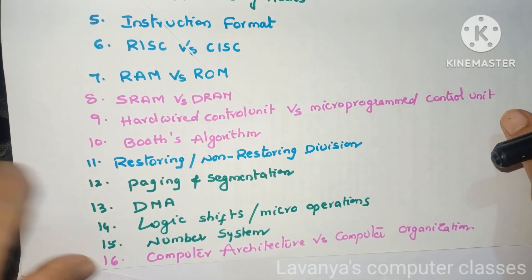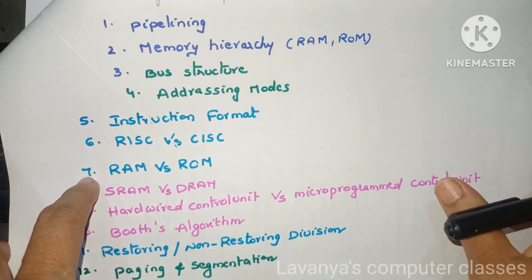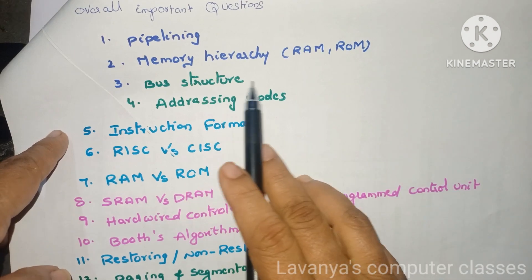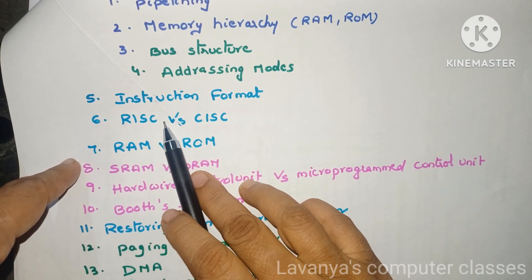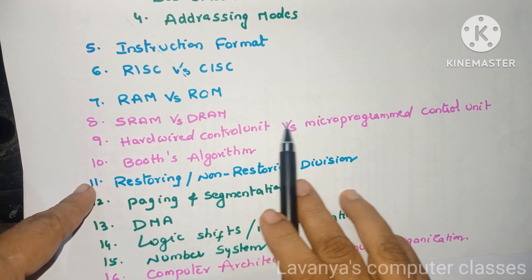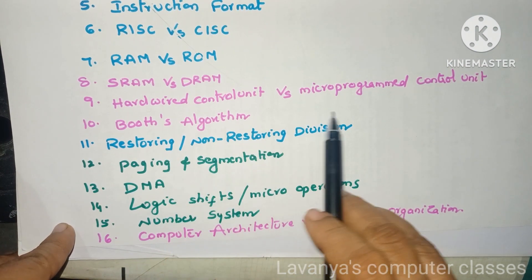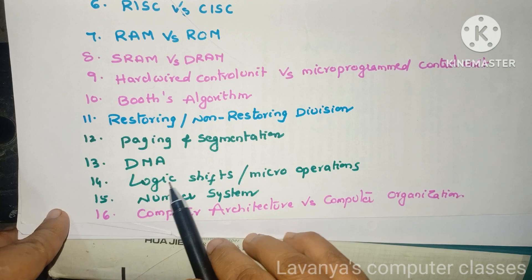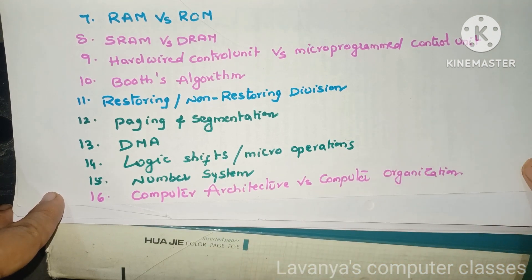Those are all the unit-wise long answer questions. Overall important topics for COA to concentrate on: pipelining — explain about pipelining and different types of pipelining, very very important. Memory hierarchy, RAM and ROM, bus structures, addressing modes. Instruction format, difference between RISC and CISC, difference between RAM and ROM, DRAM, hardware control unit, difference between hardware control unit and microprogrammed control unit. Booth's algorithm is very very important. Restoring and non-restoring division. Paging and segmentation — very important. Explain about DMA, explain all logical shift operations and micro operations. Number system — also check that. Difference between computer architecture and computer organization.